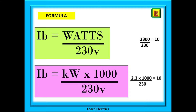Let us do the same calculation both ways, using an electric kettle. First, say our rating plate indicated 2300 watts — divide by 230 and we have a design current of 10 amps. Second, if the rating plate said 2.3 kilowatts, multiply 2.3 by 1000 to get 2300, then divide by 230 and again we get 10 amps. The same answer both ways.